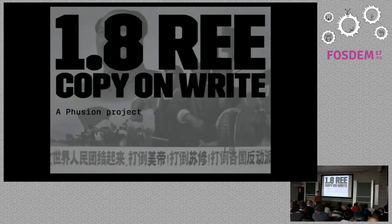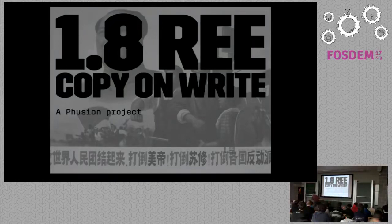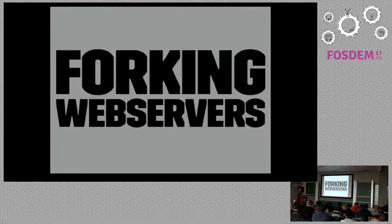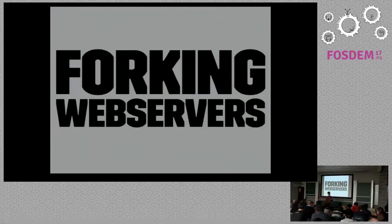Next came 1.8 Ruby Enterprise Edition — a project of Phusion, the guys that write the Passenger web server. It had support for copy-on-write memory. We have forking web servers in Ruby because we don't have real parallelism — you can't execute two bits of Ruby code at the same time. So we have two different web server processes that can execute different responses simultaneously. Puma, Passenger, and Unicorn are examples. When you fork a process, the child process shares its memory with the parent through copy-on-write memory.